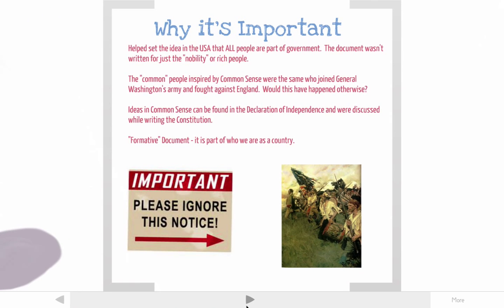So why is this document important? It helped set the idea that in the United States, all people are part of government. Everyone got involved at this point — not just the wealthy or the educated. This document wasn't written just for the nobility; everyone could read it and everyone got involved, setting the country toward the idea of everyone participating in government. The common people inspired by this document were the ones who fought — they joined the army and fought for the revolution.